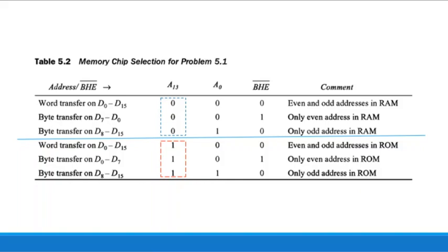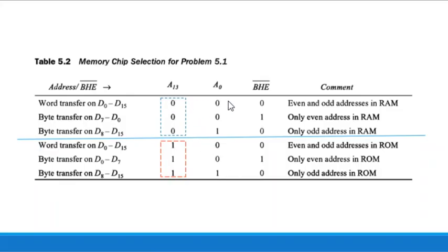A13 is 0 for RAM memories and 1 for ROM memories. A0 and BHE-bar follow the known table: when both are 0, both even and odd addresses are accessed; when A0=0 and BHE-bar=1, only even addresses; when A0=1 and BHE-bar=0, only odd addresses. This applies equally for both RAM (A13=0) and ROM (A13=1) regions, giving combinations 000, 001, 010 for RAM and 100, 101, 110 for ROM.